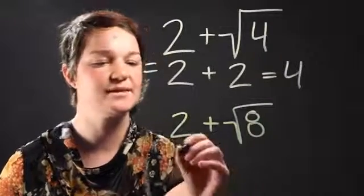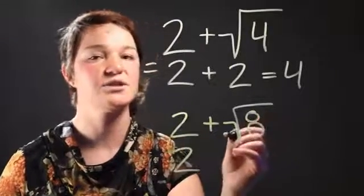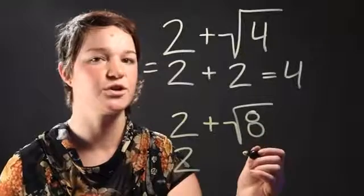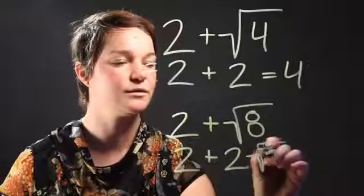It simplifies to 2, and 8 is going to be 2 times 2 times 2, or 2 cubed. When it simplifies, it becomes 2 radical 2.